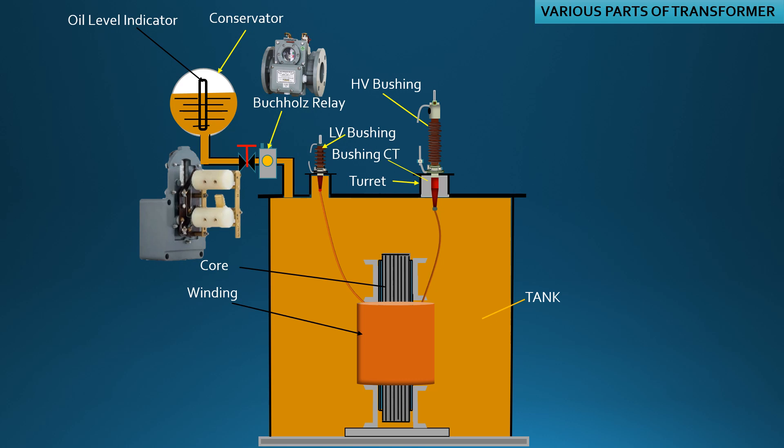Sufficient gas accumulation tilts one of the floats of the Buchholz relay that initiates an alarm, and then tilts the second float to issue a trip of both side circuit breakers of the transformer when accumulation of gas is more.